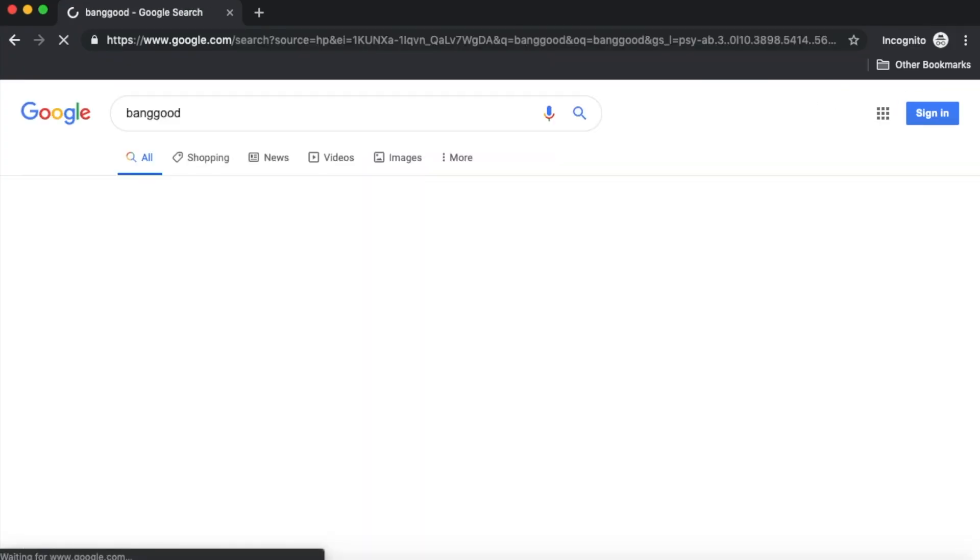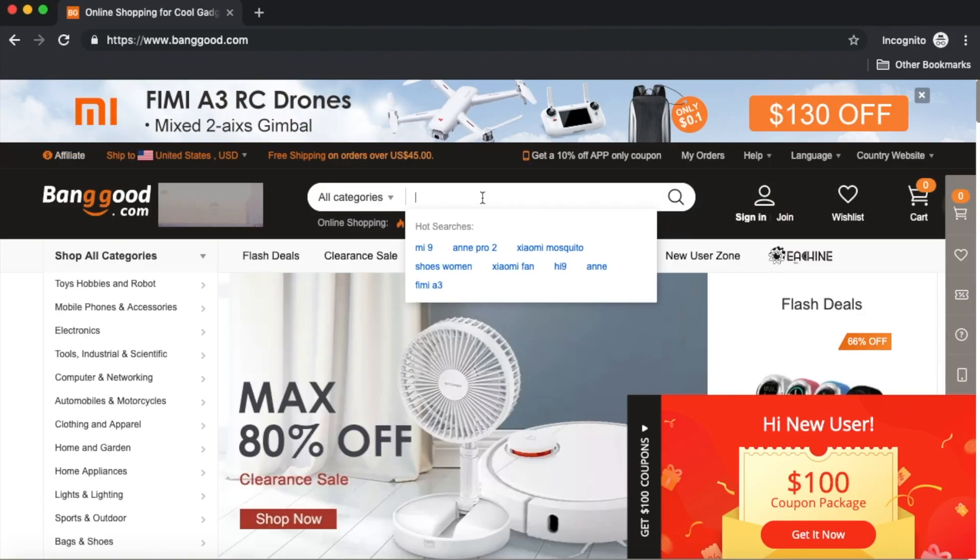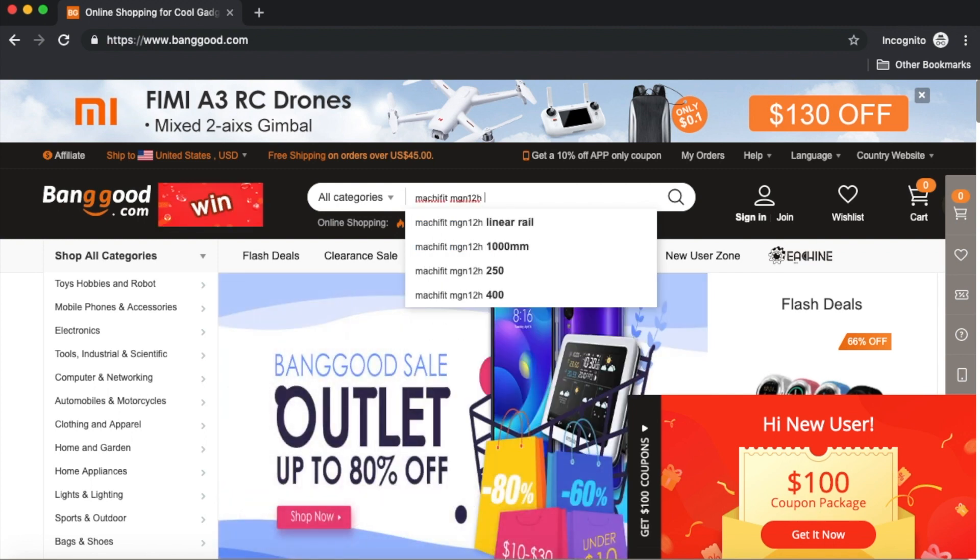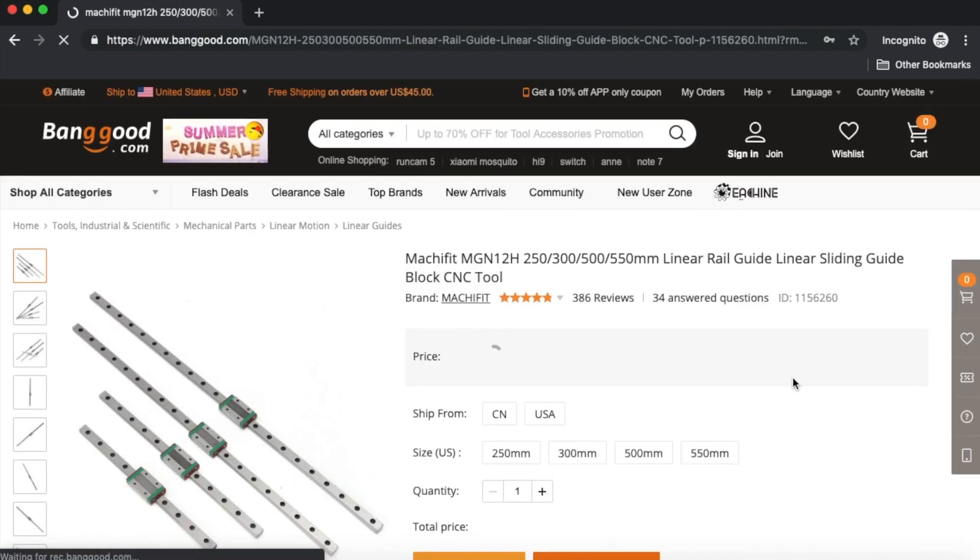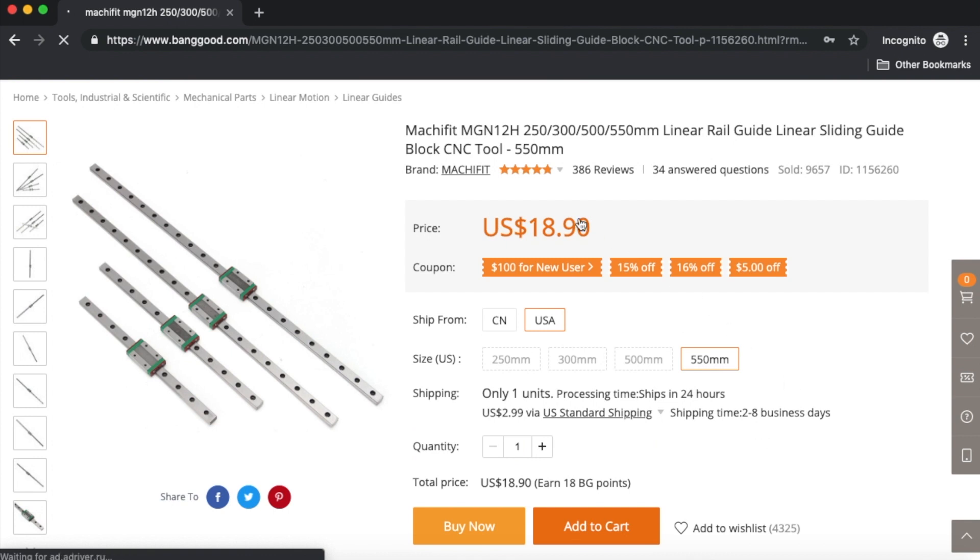I recently ordered a Matchy Fit MGN12H 500mm linear rail from banggood.com for a decent price considering how expensive most linear motion kits cost.